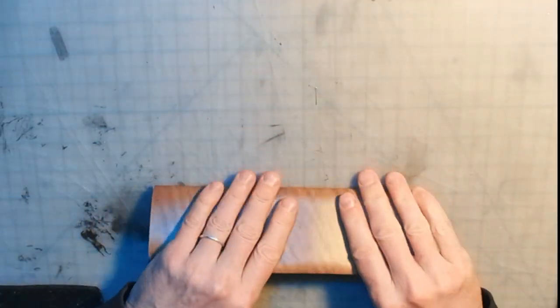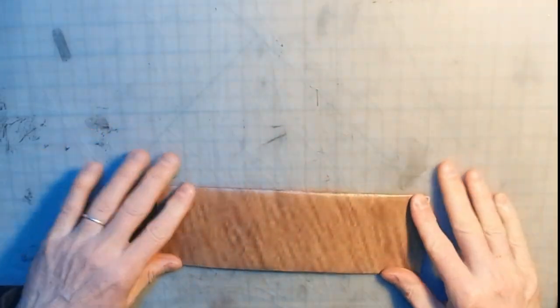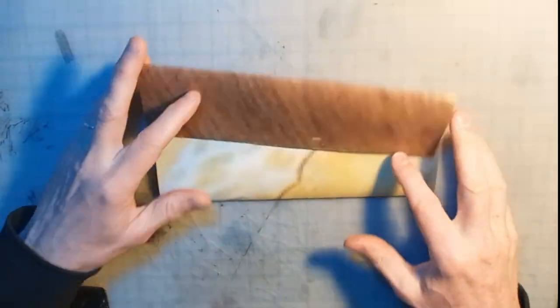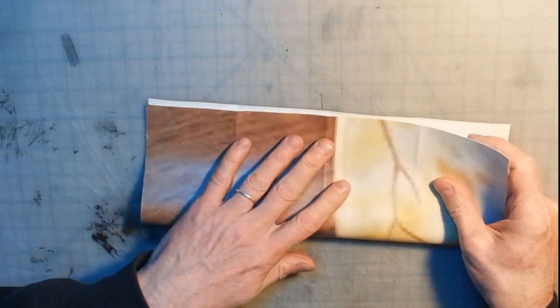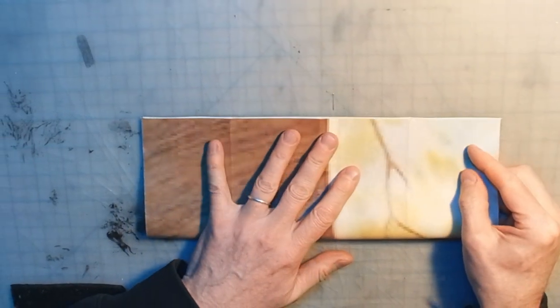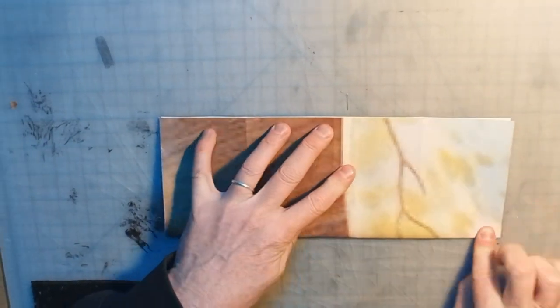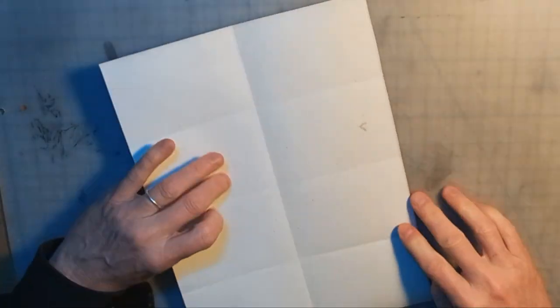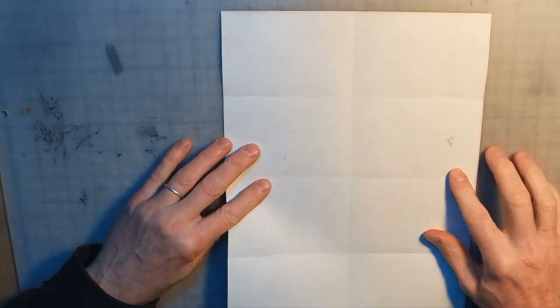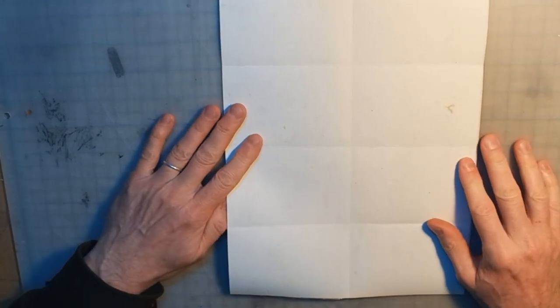So then what you get is the body of the wallet, like that. Now it'll also help, just for measuring things, to fold it in half widthwise. So we've got eight equal sections here. Sorry, let me get this ruler out of the way.